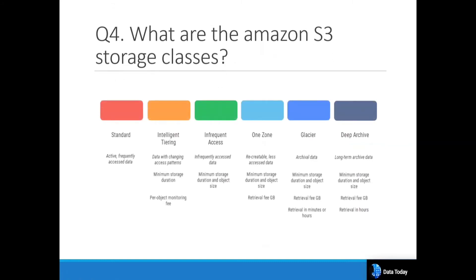The next important question — asked by about 90% of interviewers on S3 topics — is: what are the Amazon S3 storage classes? The classes are Standard, Intelligent-Tiering, Infrequent Access, Glacier, and Deep Archive. Standard is the most commonly used — data is in an active state and can be accessed frequently. Intelligent-Tiering automatically changes the storage class based on access patterns and charges a small object monitoring fee.